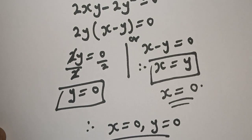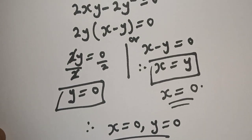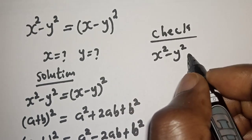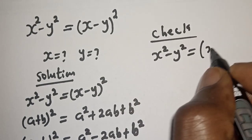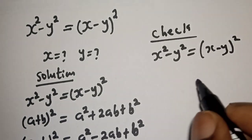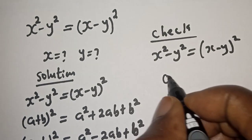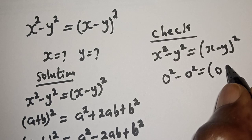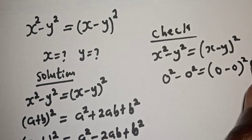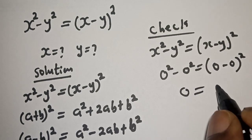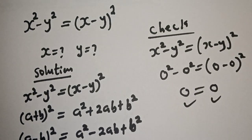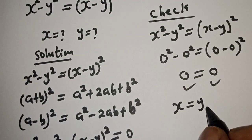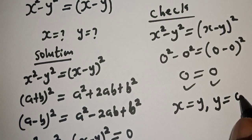Let's check to confirm if our answer is right. We have the given equation: x squared minus y squared equals (x minus y) squared. When x and y are equal to 0, we have 0 squared minus 0 squared equals (0 minus 0) squared. Therefore, the left-hand side equals 0, which satisfies the equation at x equal to y equal to 0.